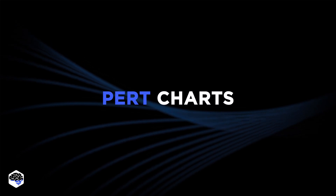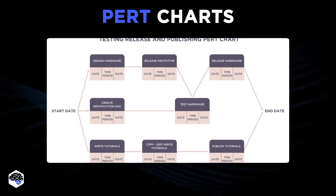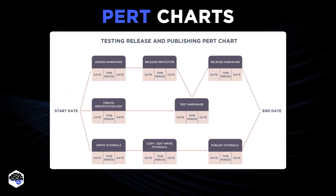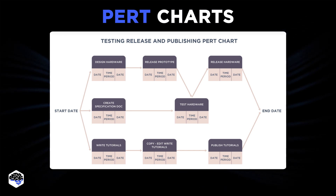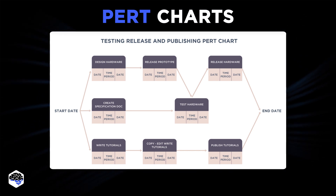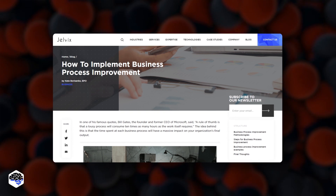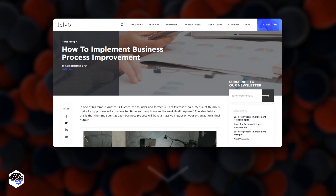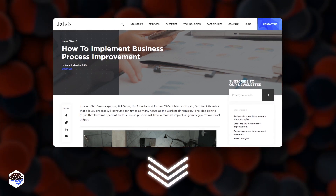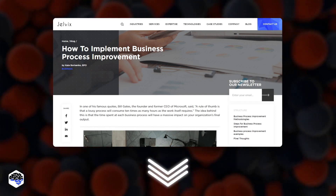Next, PERT charts — they not only show the critical path to be followed to achieve results, but also help you define a realistic timeframe for the process. By the way, for more information on business process improvement, read the article we have prepared. The link is in the description.